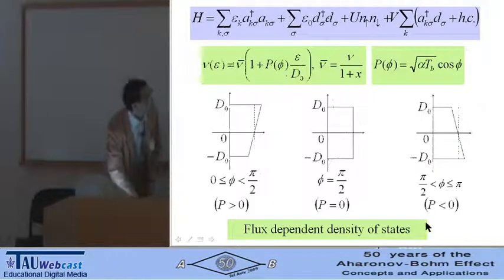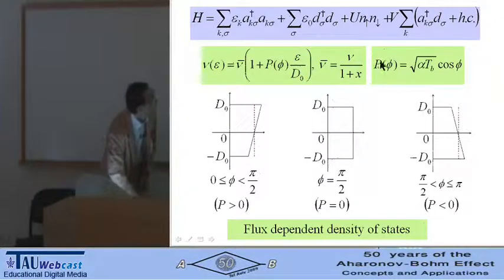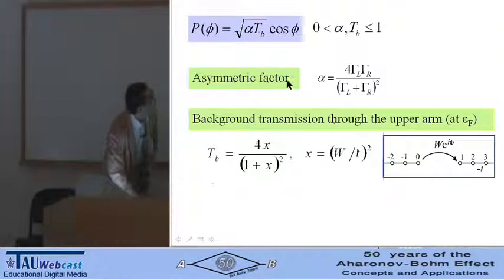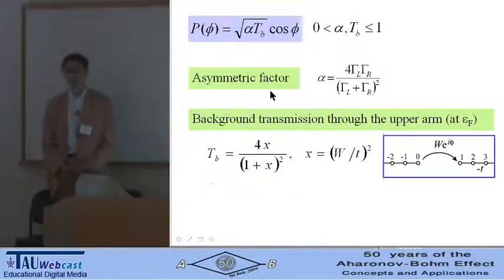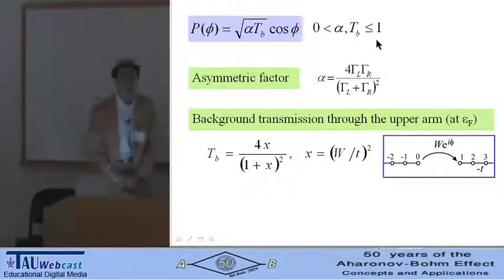Flux dependence is taken into account through this function P phi. Here, alpha is the asymmetric factor of two tunnel barriers, and T-B is the background transmission through the upper arm. Both are between zero and unity.